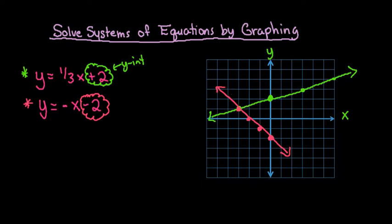So the intersection point, this point right here, the point that they have in common, is at negative 3 comma 1. Remember that the x is always first, so that would be our solution.